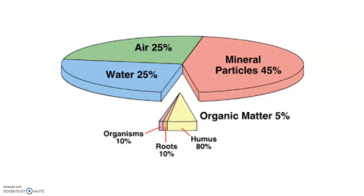Soil is mostly water, air, and mineral particles. Only a small portion of it is organic, but that being said, it's a very important portion. The organic matter is comprised of humus — not hummus, which is what you eat. Humus, with one M, you should not eat, although it most likely wouldn't kill you. The organic matter also includes roots and organisms, which depend on the soil having lots of water and air to stay oxygenated and carry out their living processes.